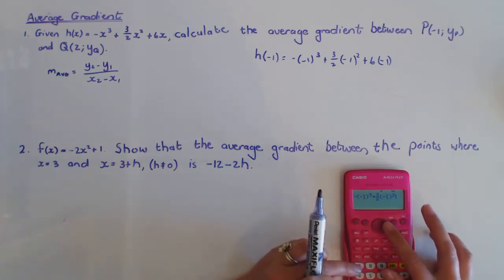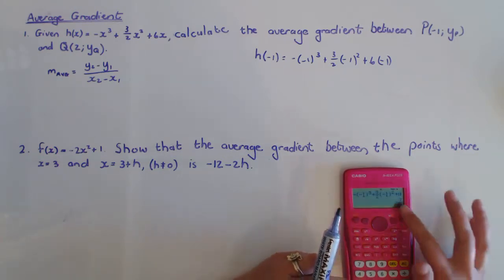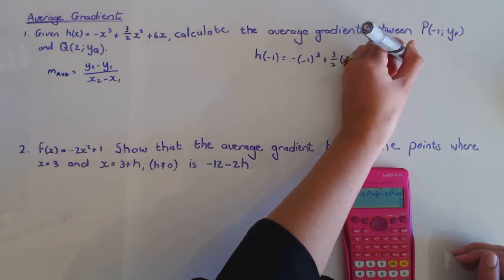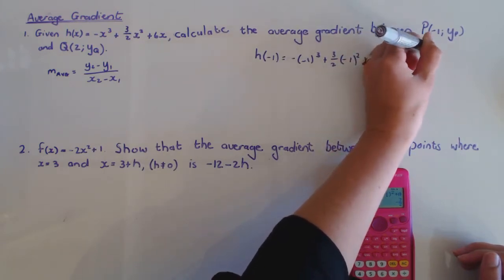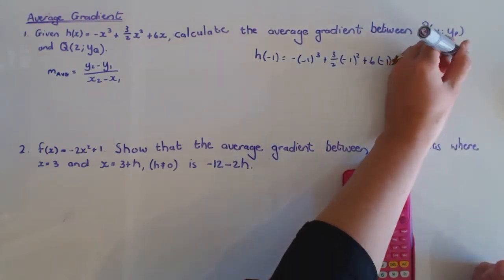-1 squared plus 6x negative 1, minus 7 over 2. So that is -7/2, so I have the point P which is (-1, -7/2). That's the one point I'm working with here.